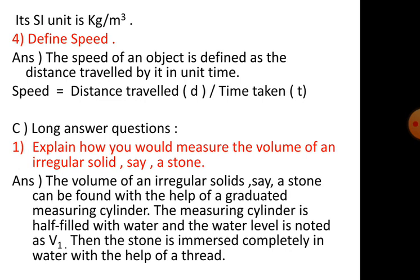Question 4: define speed. The speed of an object is defined as the distance travelled by it in unit time. Speed equals distance travelled divided by time taken.